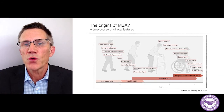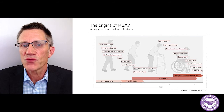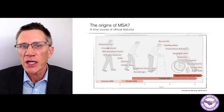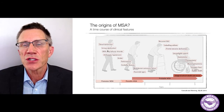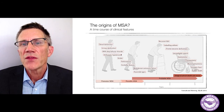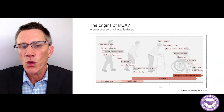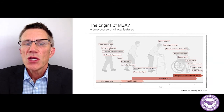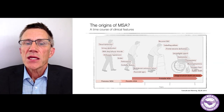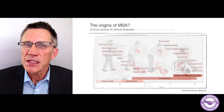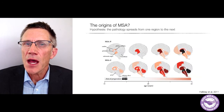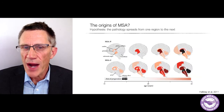Even before having motor symptoms, most people diagnosed with MSA can recall that they had sexual dysfunction, urinary dysfunction, sleep disorder, and problems with blood pressure when standing up suddenly — orthostatic hypotension.